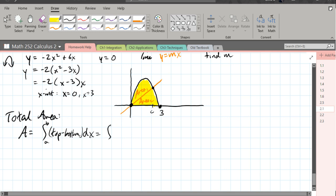Our top is our quadratic, which is negative 2x squared plus 6x minus the bottom. Oh nice, it's zero. Fantastic. And we're going from zero to three.